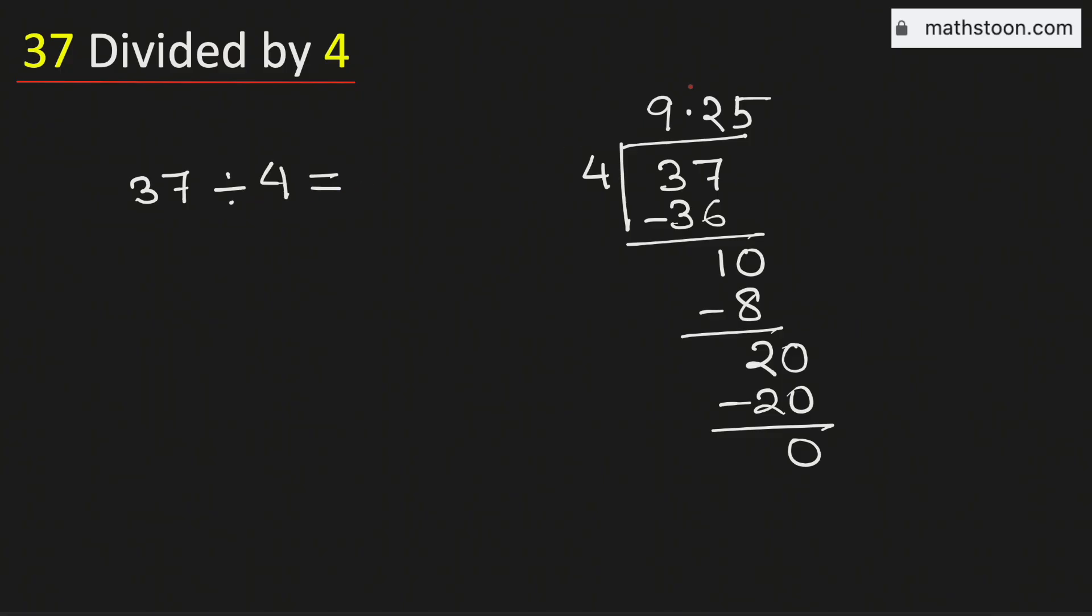Therefore, 37 divided by 4 is equal to 9.25. And this is our final answer.